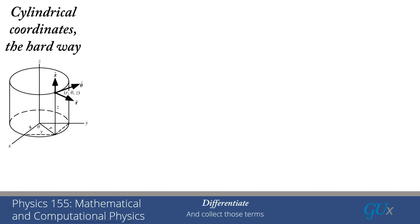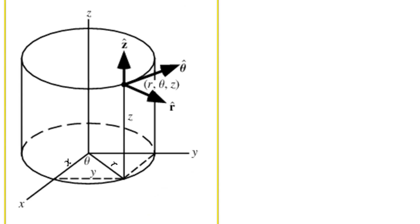We're going to start with doing it the hard way. Just to make sure that you're acclimated, here I've got a picture of the cylindrical coordinates. We're using the symbols r, theta, and z. The arrows show the unit vectors pointing in the radial direction, the theta direction, and the z direction. The angle theta is the angle between the x-axis and r, so that x equals r cos theta and y equals r sin theta. And z is a coordinate in both Cartesian and cylindrical coordinate systems.